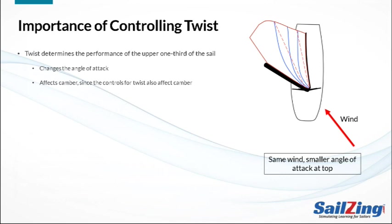Twist affects two aspects of the upper sail's performance: angle of attack and camber. As you can see in the diagram, if the wind direction is the same at the bottom and top of the mast, the angle of attack will be smaller at the top of the sail, meaning there will be less power in the top, assuming the bottom is trimmed correctly. Also, a twisted sail will have less camber at the top since the leech will be flat. This is not surprising since the controls that affect camber — primarily the mainsheet and the vang — also affect twist.